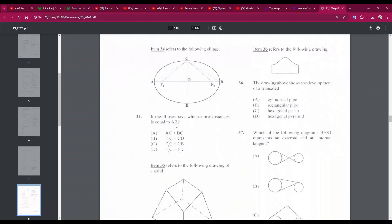Number 34: in the ellipse above, which sum of distances is equal to AB? So AB is the major axis. And so something to note, the distance from any point on the circumference of an ellipse to both foci is equal to the length of the major axis. So F1C plus F2C, so F1 and F2 are the foci points. F1C plus F2C would be equal to AB. So the answer is F1C plus F2C. So the answer is D, number 34D.